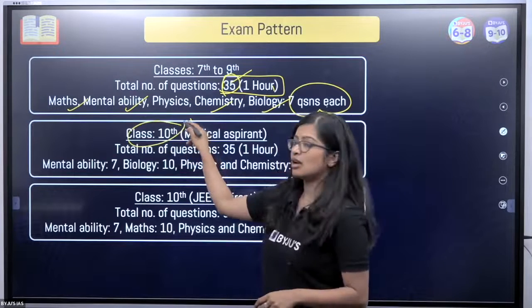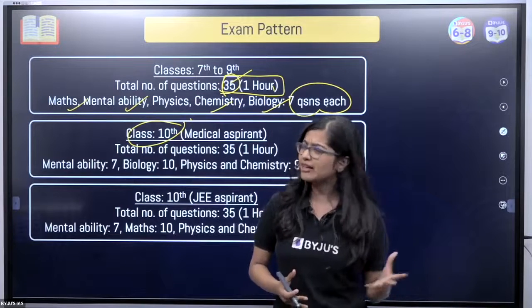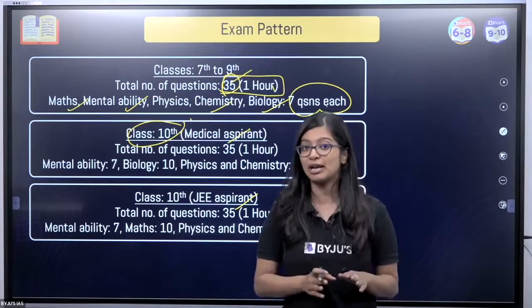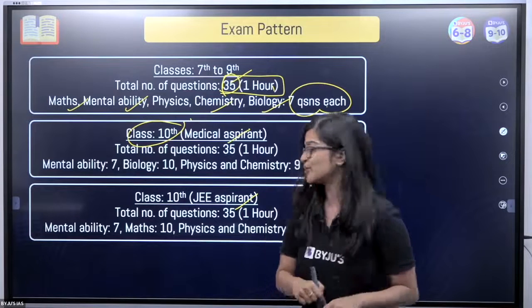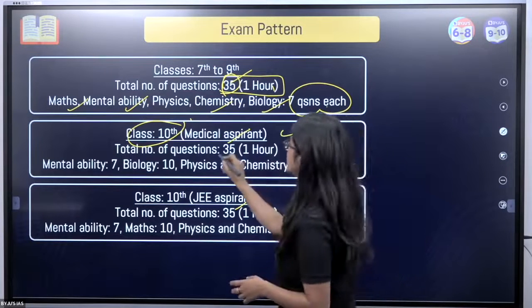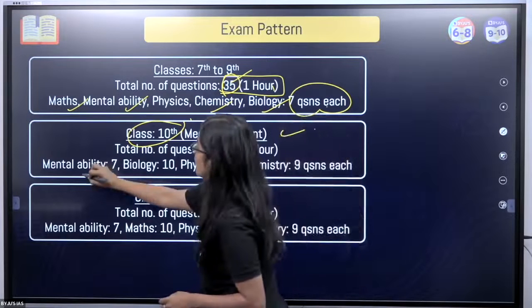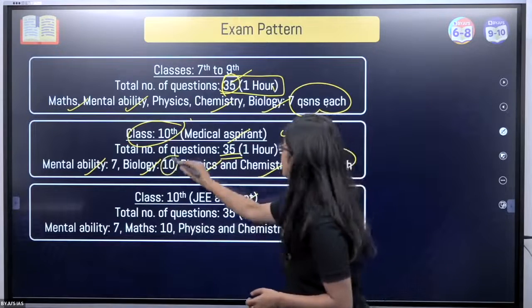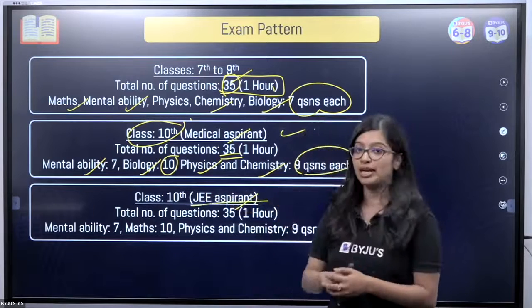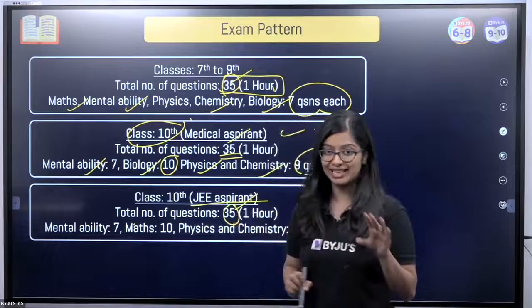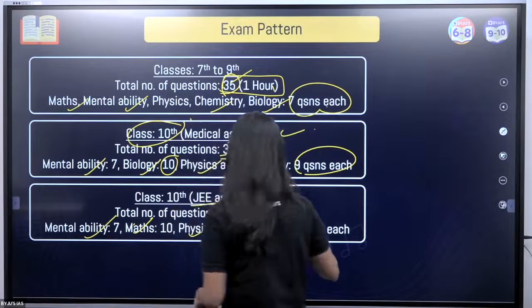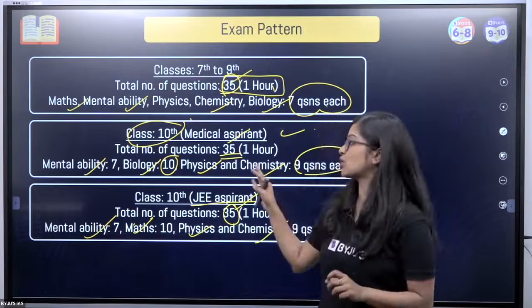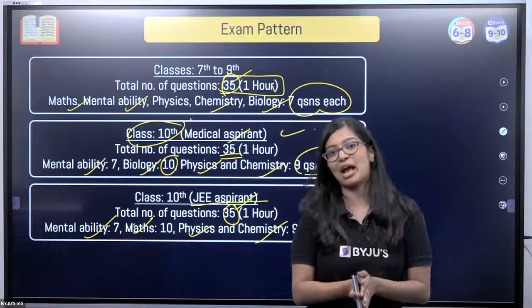For Class 10th, you must either be a medical aspirant or a JEE aspirant. If you're a medical aspirant, you'll have a total of 35 questions covering Aptitude, Biology, Physics, and Chemistry. If you are a JEE aspirant, you'll also have a total of 35 questions but from Maths, Aptitude, Physics, and Chemistry. You can see the total number of questions per subject on the screen — make a note of it, as this is extremely important. You can take a screenshot as well.